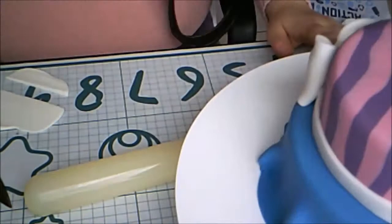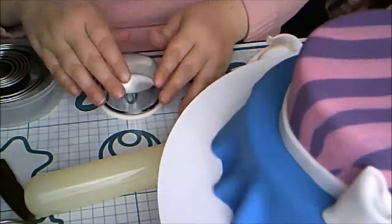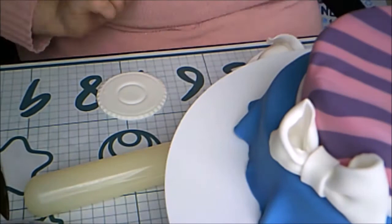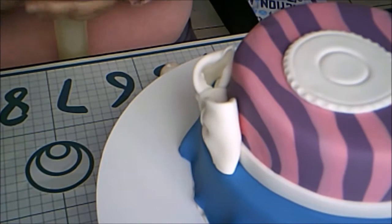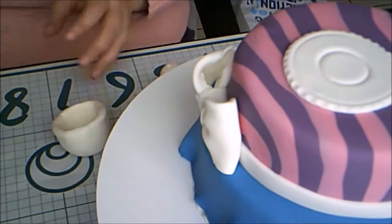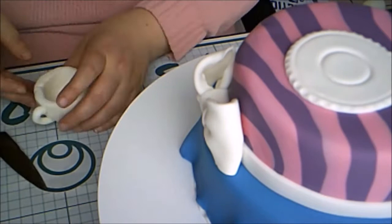Then I added some tylose powder and made a teacup, wrapping it around the end of a rolling pin. Then I added a circle on the bottom of the cup and a curved handle. If this were a different cake I would try to make this cup perfect, but since it's Alice in Wonderland, I felt that a bit wonky was really the order of the day.